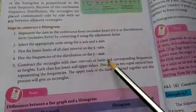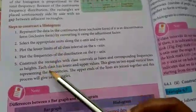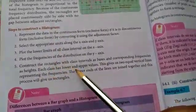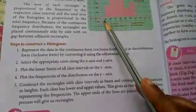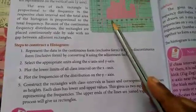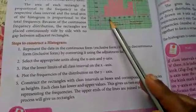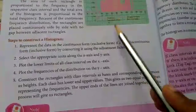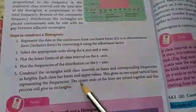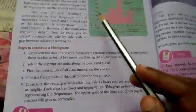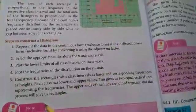Construct the rectangles with the class intervals as bases and corresponding frequency as height. For example, in a rectangle, the lower value may be 50 and the upper value 60; in the next rectangle, the lower value is 60 and the upper value is 70. Equal vertical lines representing the frequency are drawn, and the upper ends of the lines are joined together to form the rectangles.